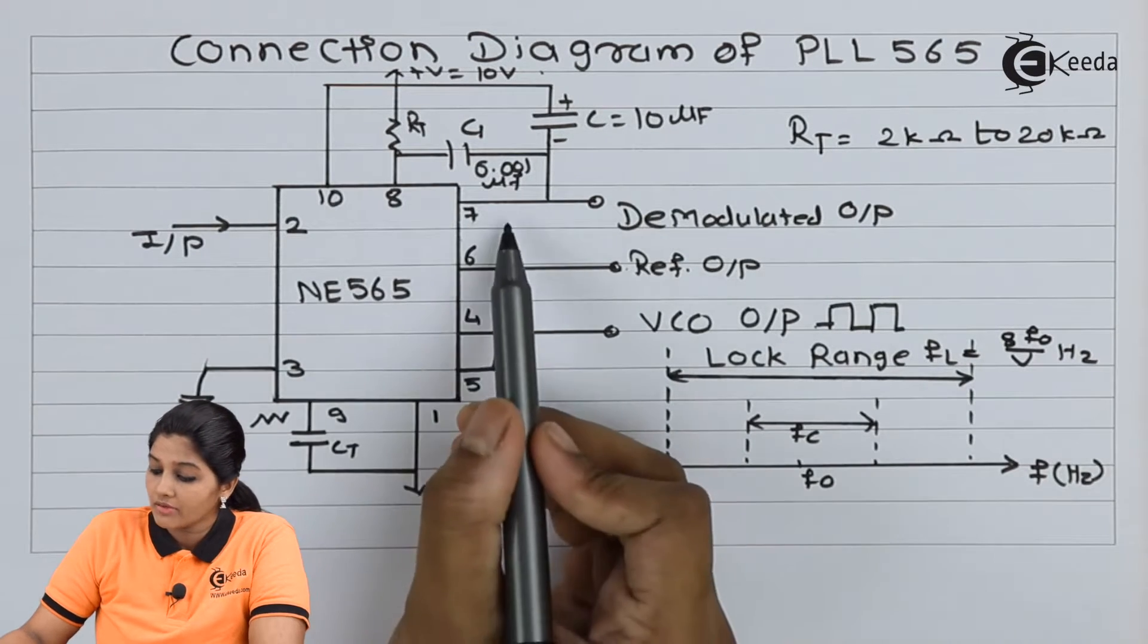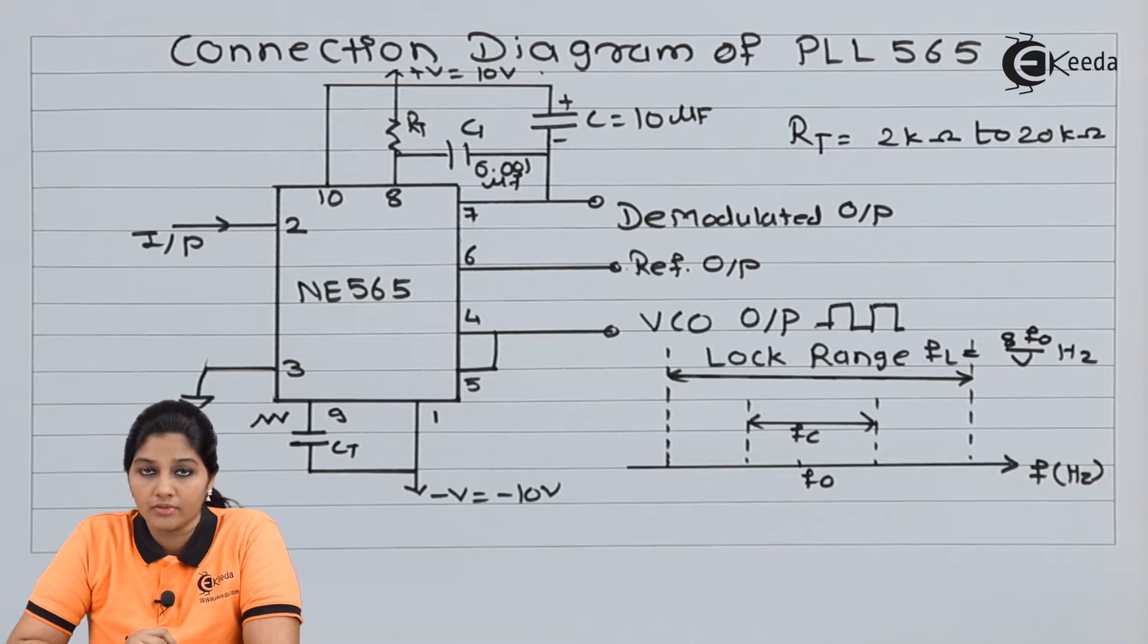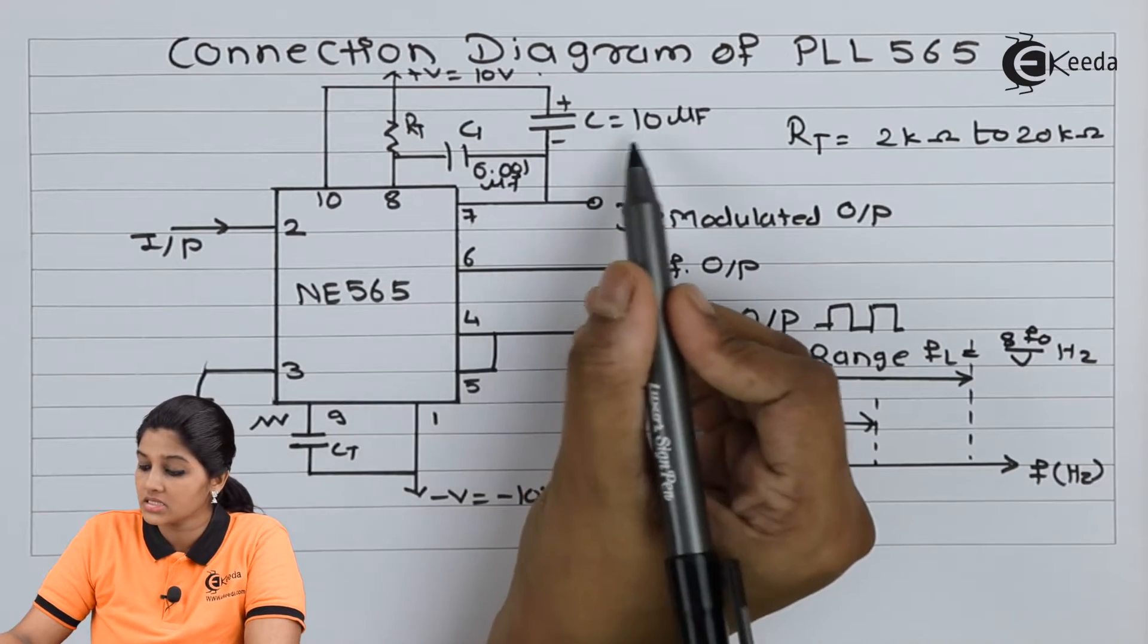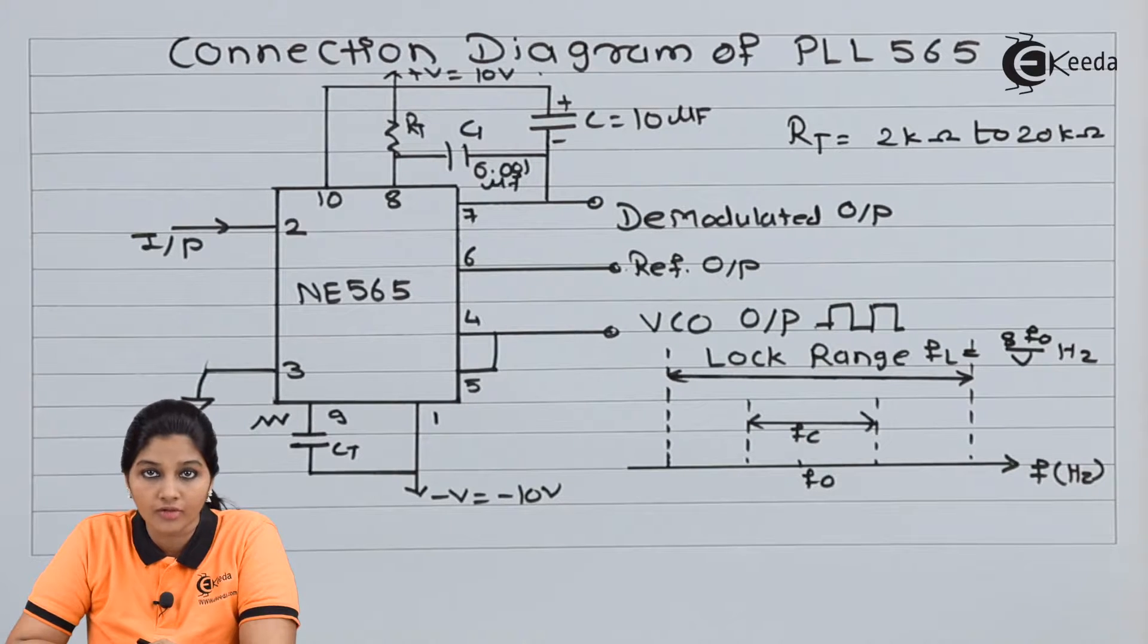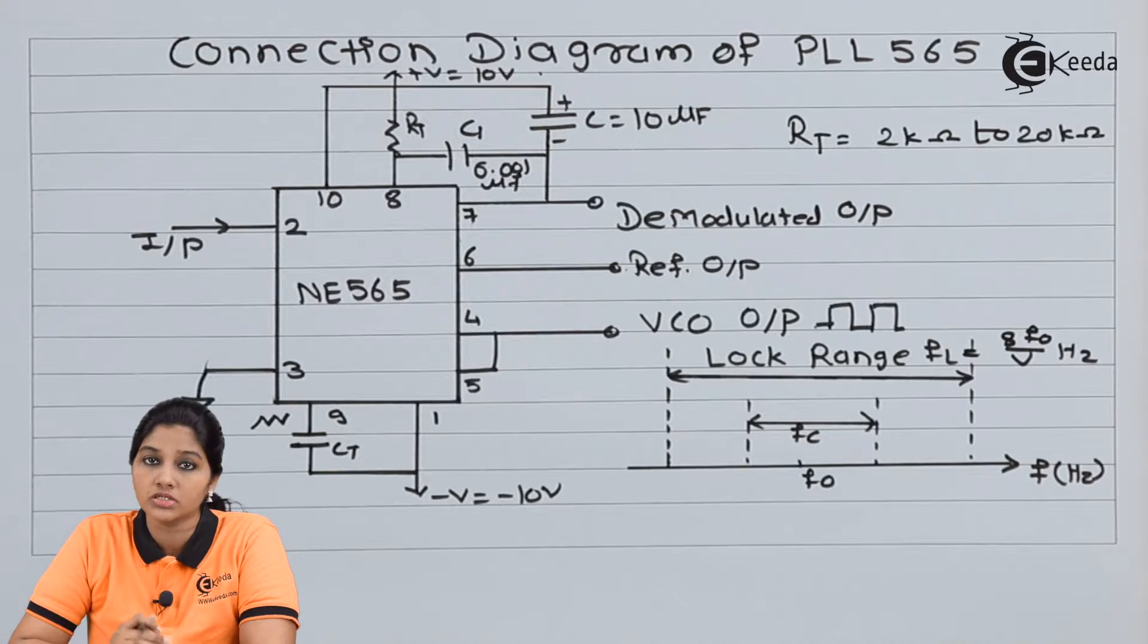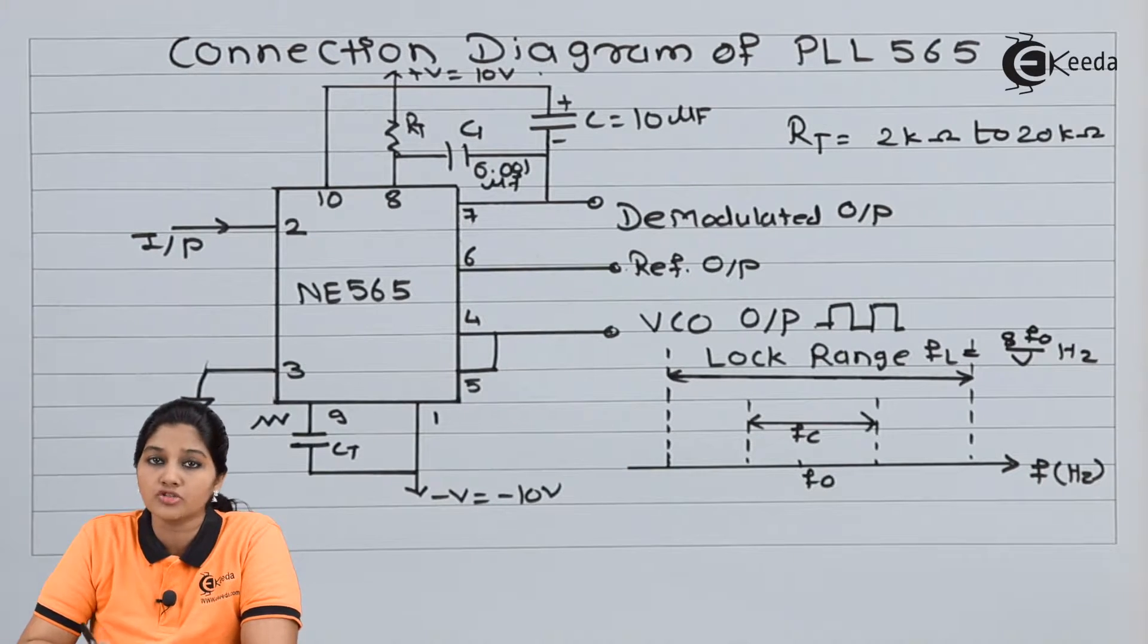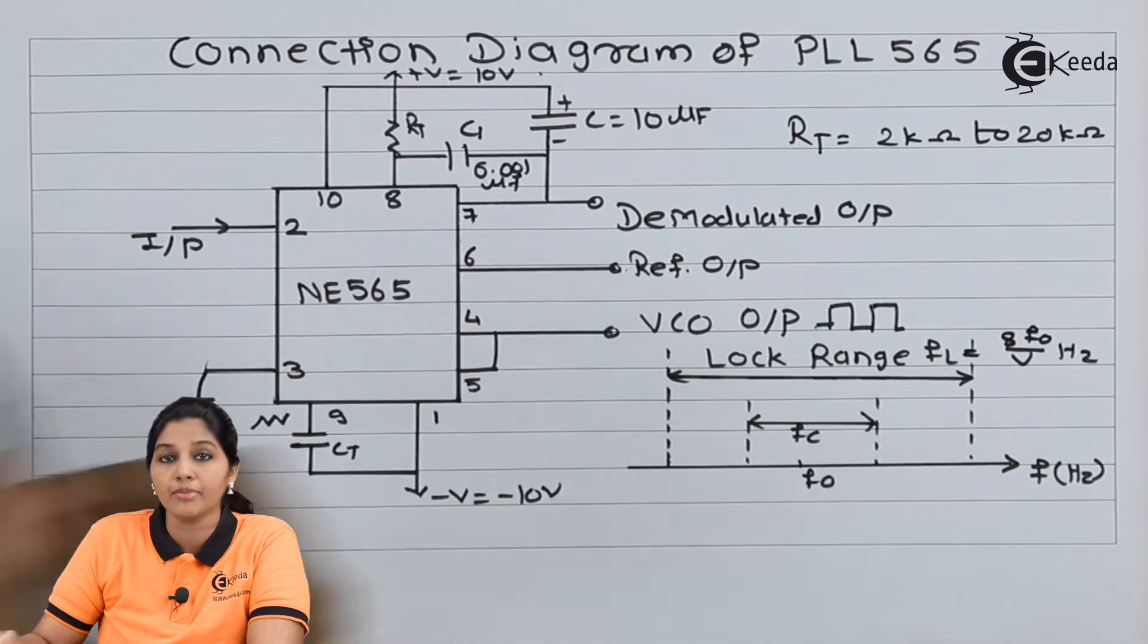Pin number 7 and pin number 10 are basically used to provide RC filter network. Here, the capacitor C having a value of 10 microfarad and internal resistor of 3.6 kilo ohms is connected to pin number 10. Therefore, an RC filter network is formed between pin number 10 and pin number 7.